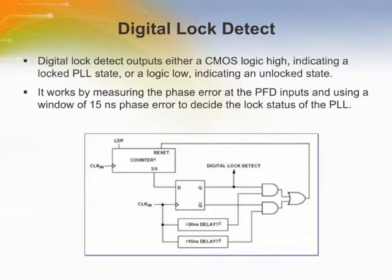The digital lock detect outputs either a CMOS logic high indicating a locked Phase Lock Loop state, or a logic low indicating an unlocked state. It works by measuring the phase error at the PFD outputs using a window of 15 nanoseconds to detect the lock state. When the phase error on five or more consecutive cycles is inside the 15 nanosecond window, the PLL is considered locked. When the phase error drifts outside of the 30 nanosecond loss of lock threshold on any subsequent PFD cycle, it registers an out-of-lock condition.